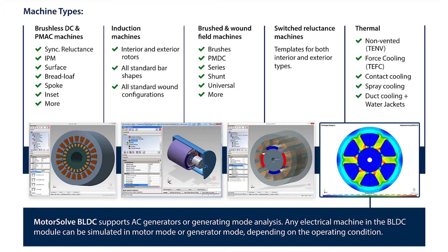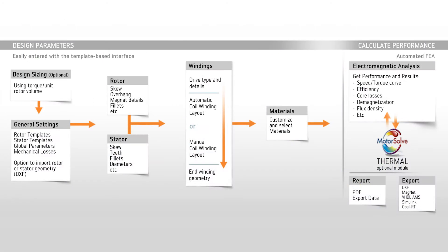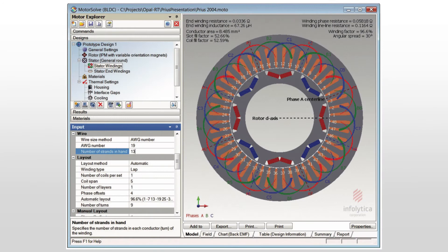So it's the engineer who comes up with the model, but can you give us an example of what he might get out of the simulation of the model? Speed torque curve, efficiency, power, back EMF — all the common motor parameters and performance considerations that are necessary when they're trying to match up to the specs they're given.